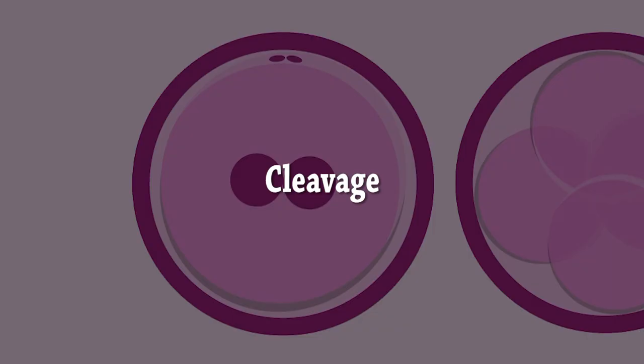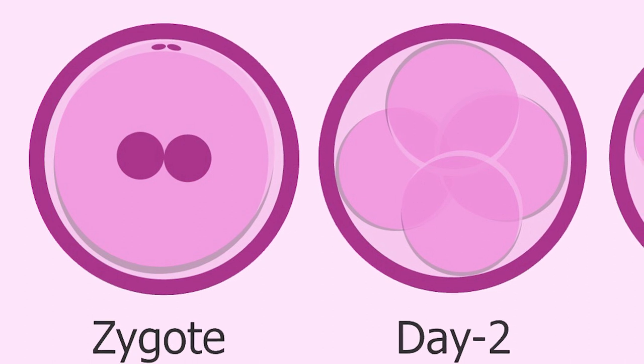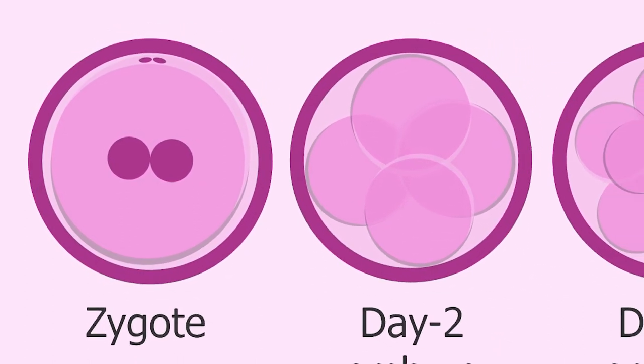The mother will have terrible pain, and at times the fallopian tube may burst, which may be fatal to the mother. Cleavage: the beginning of cleavage is marked with the zygote dividing through mitosis into two cells. Mitosis continues and the first two cells divide to form four cells, then eight cells, and so on.